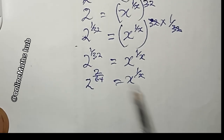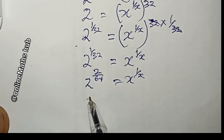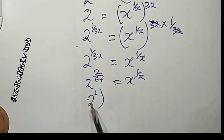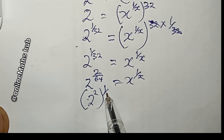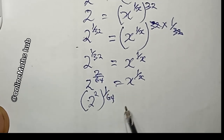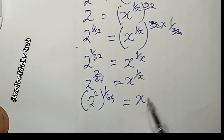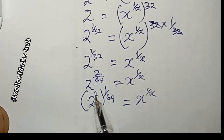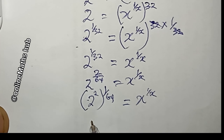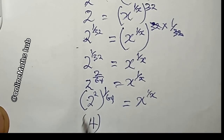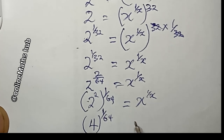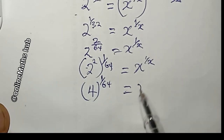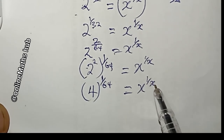Combining the two inside: 2 squared to the power 1 over 64. Since 2 squared is 4, this gives 4 to the power 1 over 64 is equal to x to the power 1 over x.